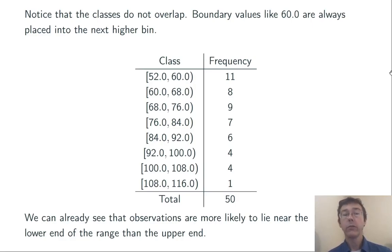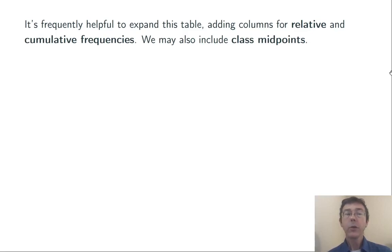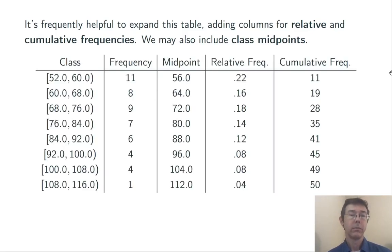Just looking at this frequency distribution, we can see that observations are more likely to lie near the lower end of the range from 52 to 116 than the upper end. It's frequently helpful to expand this table, adding columns for the class midpoints, the relative frequencies, and the cumulative frequencies. Like this.